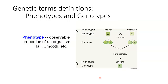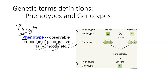Here are some critical genetic terms. The first is phenotype. Think of the word 'physical' — it starts with 'ph.' A phenotype is something you can clearly observe, like tall, smooth, color, or texture. This is a characteristic you can observe. When we talk about passing genes and traits from parent to offspring, if I ask you questions about phenotype, I'm talking about a physical component.